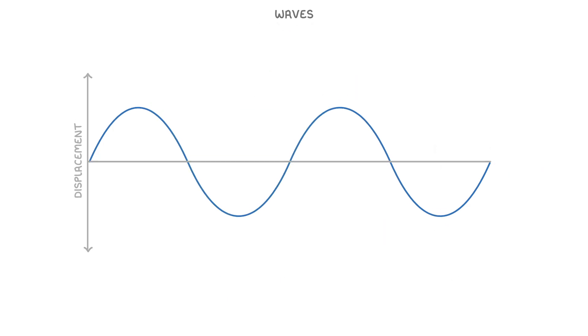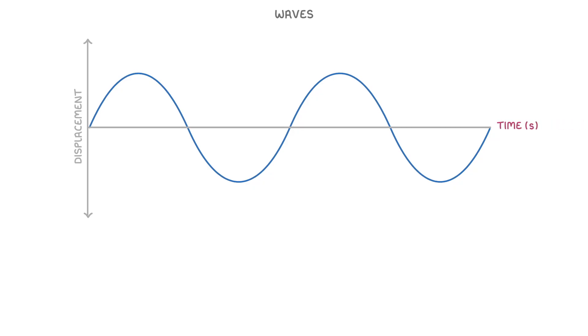Now sometimes you might see a displacement time graph instead, which looks pretty much the same. But because we have time on the x-axis instead of distance, the length of one complete oscillation would be the time period instead of the wavelength. And the time period is just the time it takes for one complete oscillation.